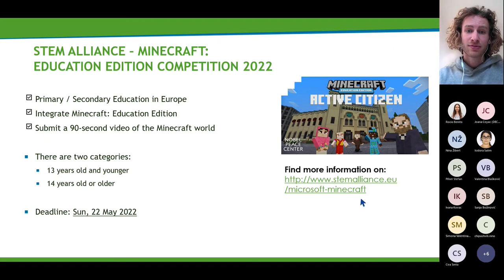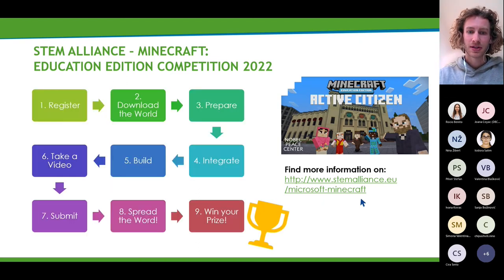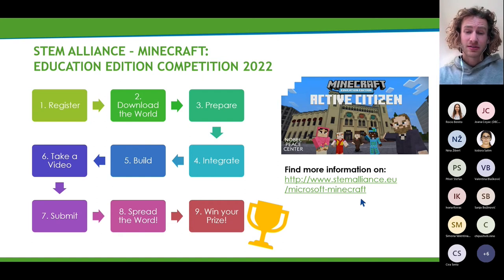First, have a look at the terms and conditions, because they provide all the guidelines you need. That's the place where you find all the relevant information. Here is the step-by-step process. First, register for the competition — to participate, you need to register, and this way we can send you updates such as the extension of the deadline and further guidance and information.